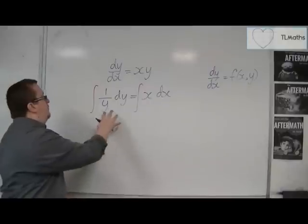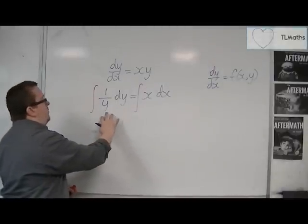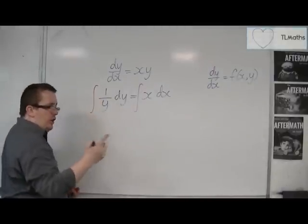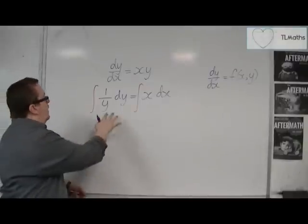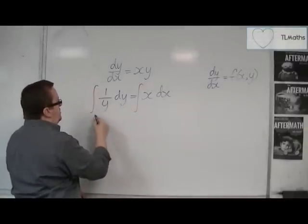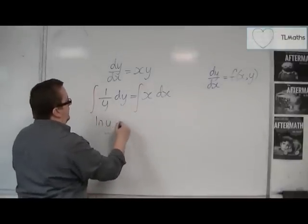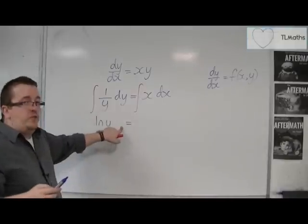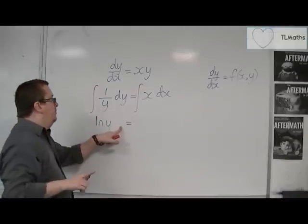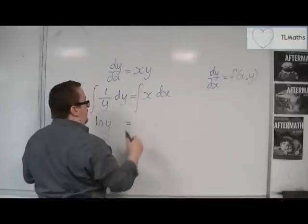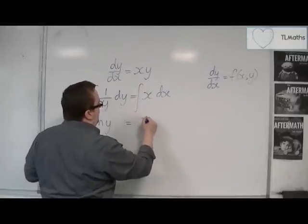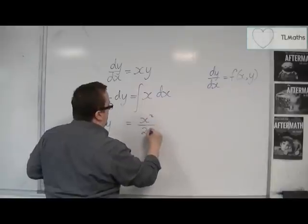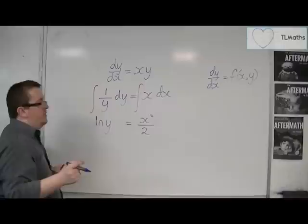Now, if you're integrating with respect to y, then we don't need to worry about implicit differentiation, all those bits in there. 1 over y dy integrates to log y. Now, I'm going to leave the constant of integration for a moment, and we're going to explain that. Now, we're going to integrate x dx. So we're going to have x squared over 2. And we'd also have a constant of integration there.